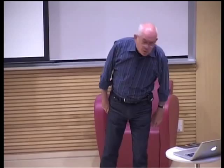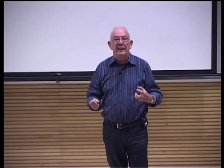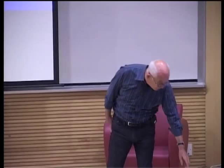I want to take this insight that an economy is basically formed from the arrangements we make or the technologies — call them what you will — and grows up around those. Then we have to say where the technologies come from. The next part of the argument is that technologies in general form a vast chemistry, meaning they're put together from simpler technologies and become building blocks for yet further technologies.